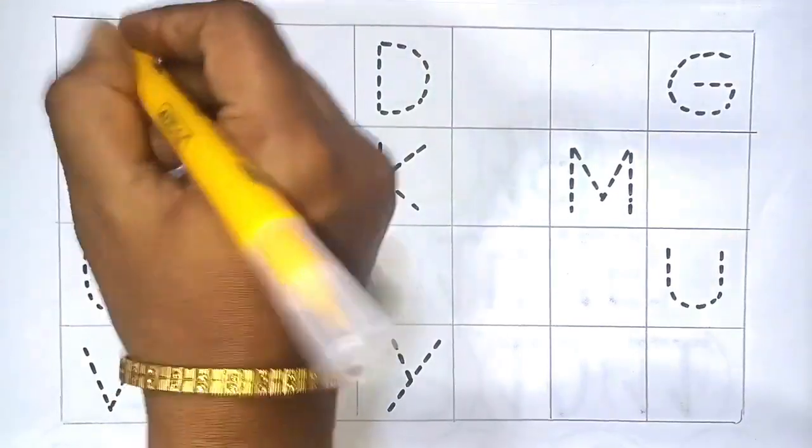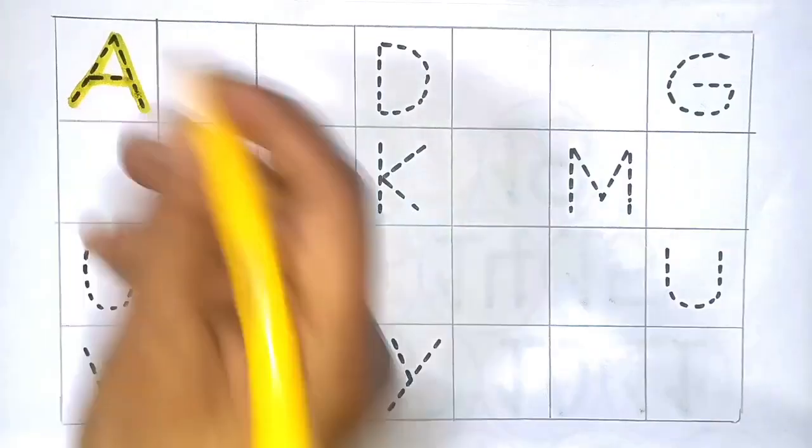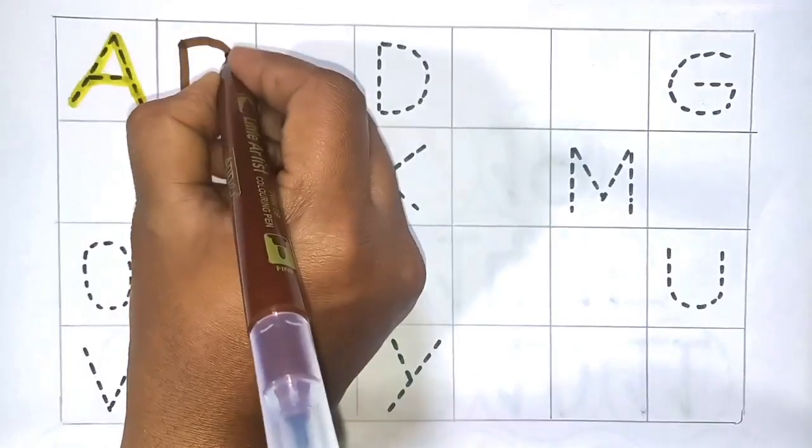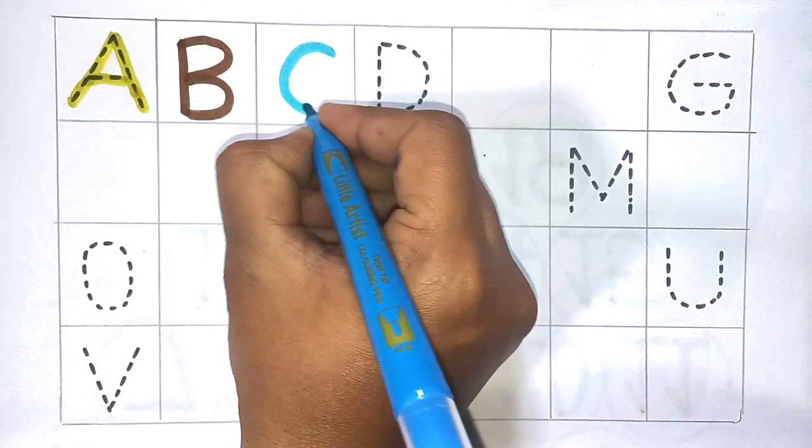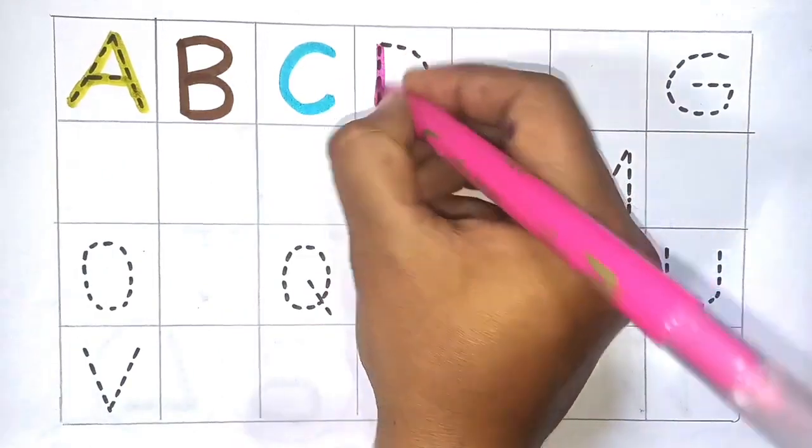A, A for apple, next B, B for ball, next C, C for cat, next D, D for dog.